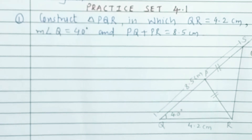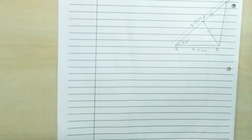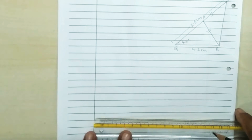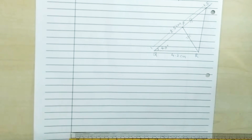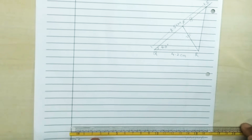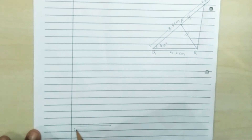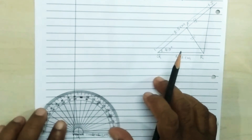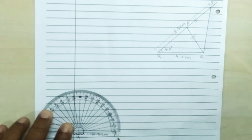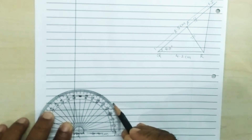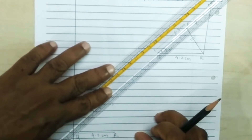This is the analytical figure, so we can now draw the fair figure. First, we will draw the base of triangle PQR. Base QR is 4.5 cm. Then, at point Q, make the angle of 40 degrees and draw the angle at point Q.